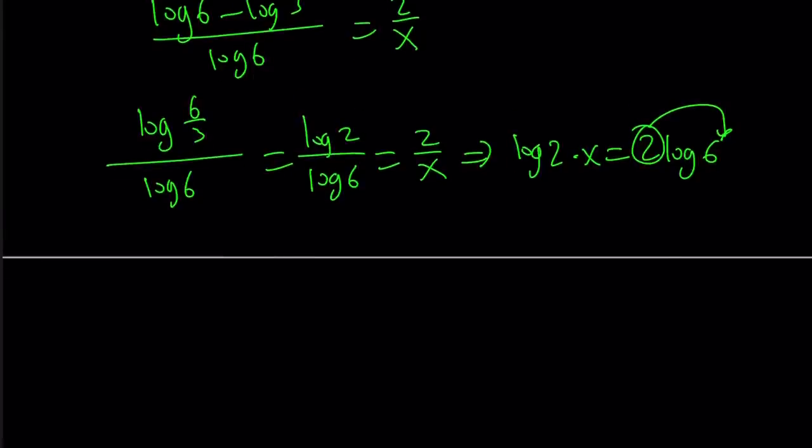And now 2 can be moved because that's going to become a power. And we get log 2 times x equals log 6 squared, which is log 36. And then finally, dividing by log 2, we get x by itself, log 36 over log 2.